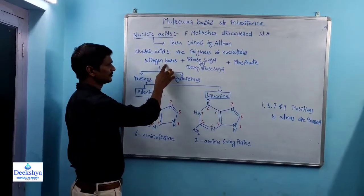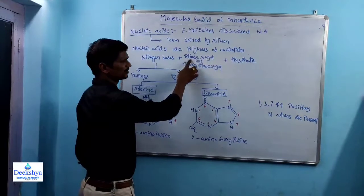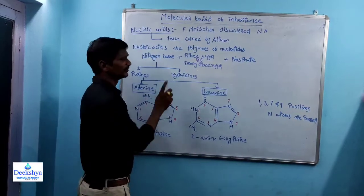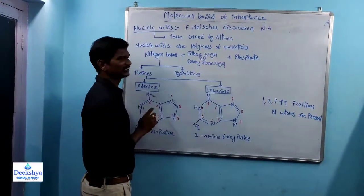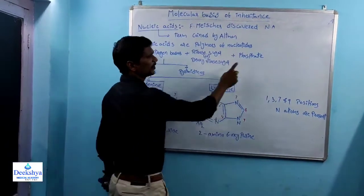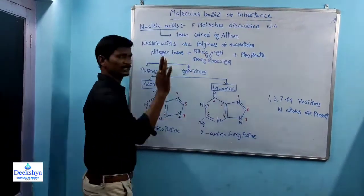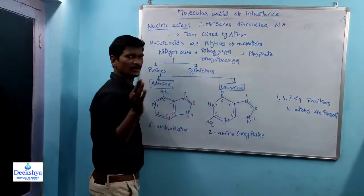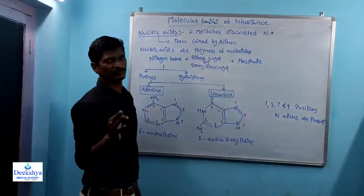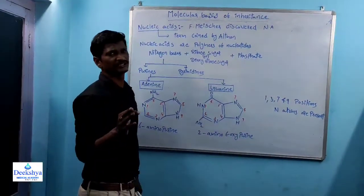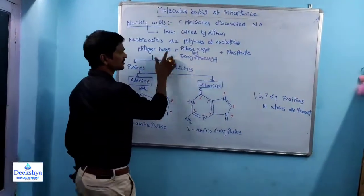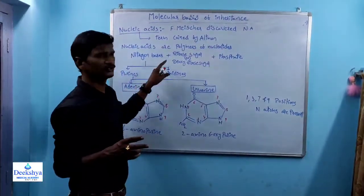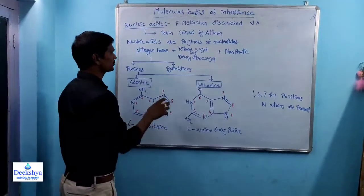Within nucleic acids, there is a nitrogen base, and either ribose sugar or deoxyribose sugar, plus phosphate. Within RNA, ribose sugar is present. Within DNA, deoxyribose sugar is present. If only two components are present — nitrogen base and ribose sugar — that is called a nucleoside. If all three components (nitrogen base, ribose sugar, and phosphate) are present, it is called a nucleotide.